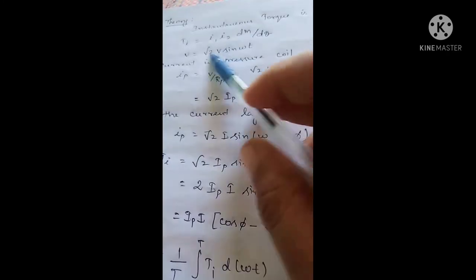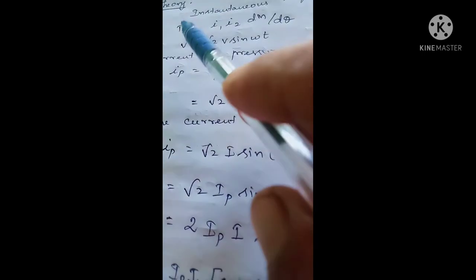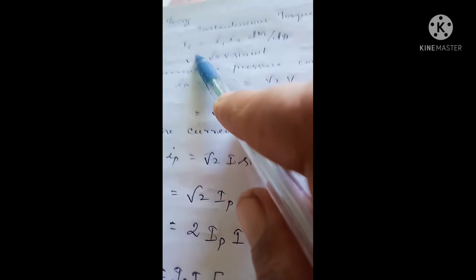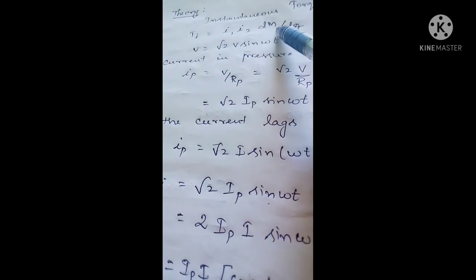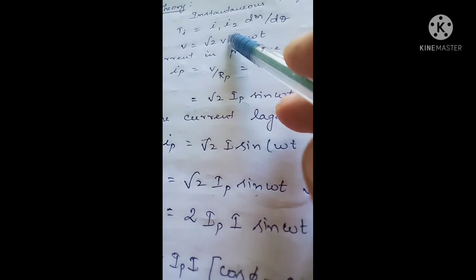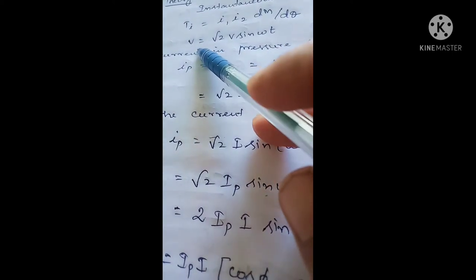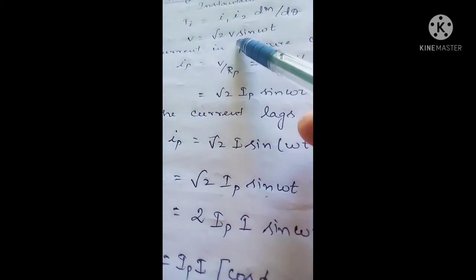This wattmeter measures the instantaneous torque. The instantaneous torque Ti = I1 · I2 · dM/dθ. That is, the instantaneous torque developed in this wattmeter is due to currents I1 and I2, and since there are two different coils there develops mutual inductance. The instantaneous voltage applied is v = √2 · V · sin(ωt).